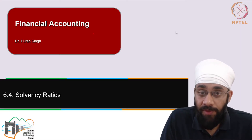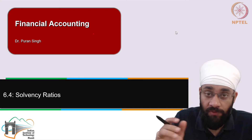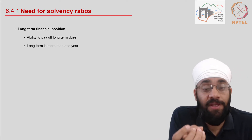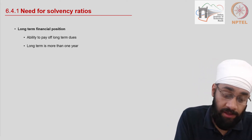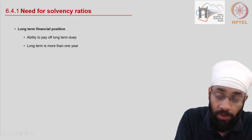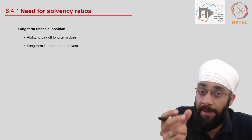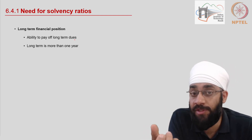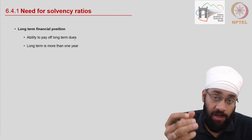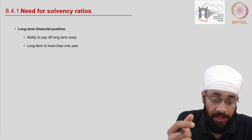In this video we are going to discuss the indicators used to judge the solvency position of the business. The solvency position refers to the long-term position of the business and we want to judge the ability of the business to pay its long-term dues. The long-term dues refer to non-current liabilities — bank loans, debentures, or bonds in the balance sheet. There are three indicators which help us understand this solvency position.